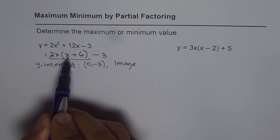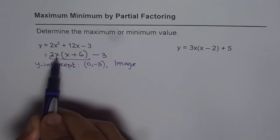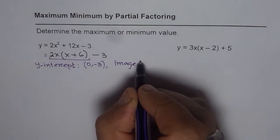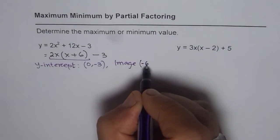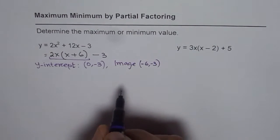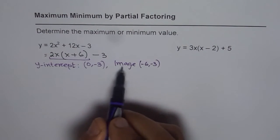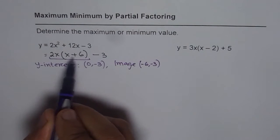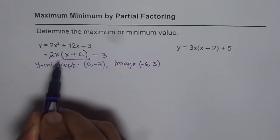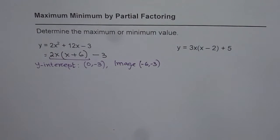At x equals to minus 6, again, this factor will be 0. 0 times anything is 0. So, we get image at minus 6, minus 3. Now, these two are actually x intercepts of the function 2x times x plus 6. So, these are two ways of looking into the same thing.